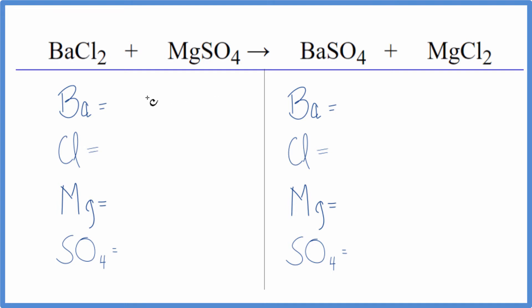So to balance it, let's count the atoms up. One barium, two chlorine atoms, one magnesium, then we get to this sulfate. We have it here, and we have it here. So we're just going to call that one thing since we have it on both sides.